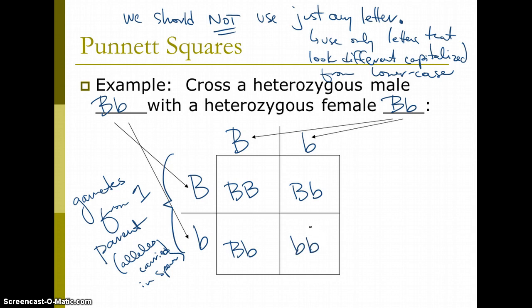And so, what we know from this is that there is a 25% chance that the offspring between these two parents, for each offspring, it will be homozygous dominant. There's a 50% chance that it'll be heterozygous, and a 25% chance that it'll be homozygous recessive.